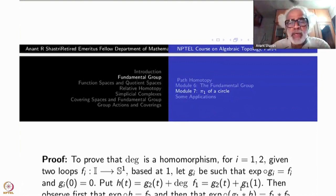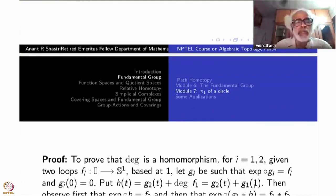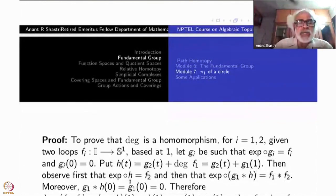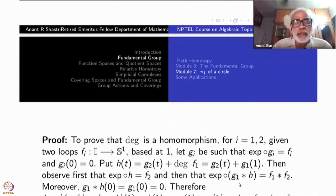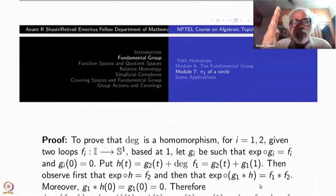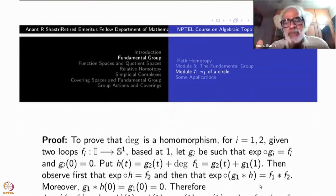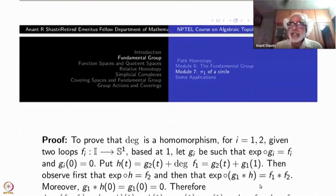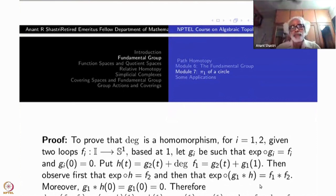The degree of F1 is nothing but the end point of G1. So this is my definition of H(t). What I have observed is that exponential of H is also equal to F2. Therefore, what we get is that exponential of G1 star H equals exponential of G1 star exponential of H, which will be F1 star F2. So I have constructed the lift of F1 star F2 using the lifts of F1 and F2.